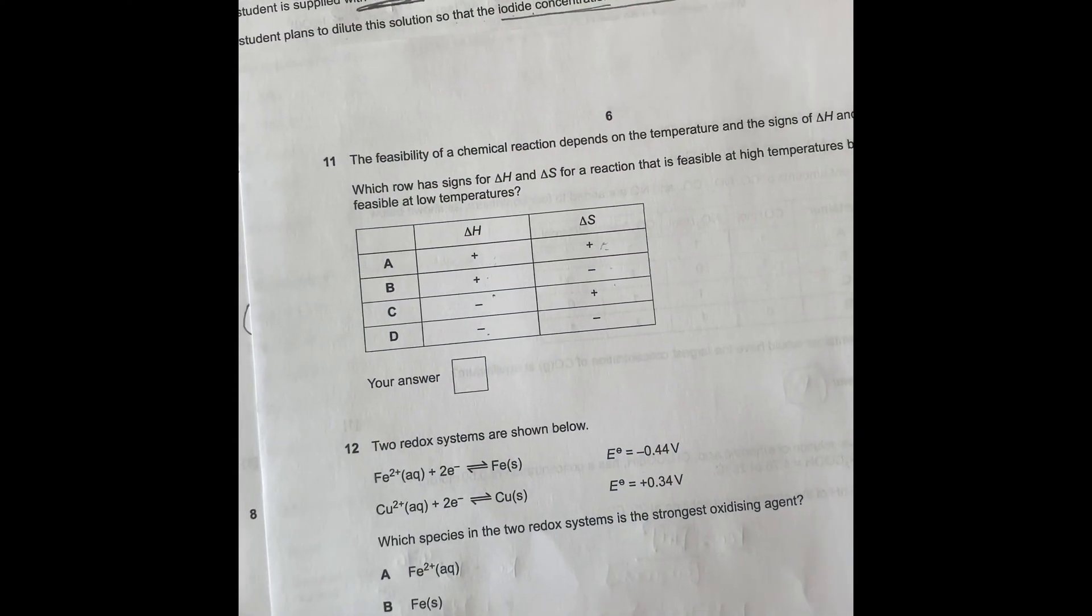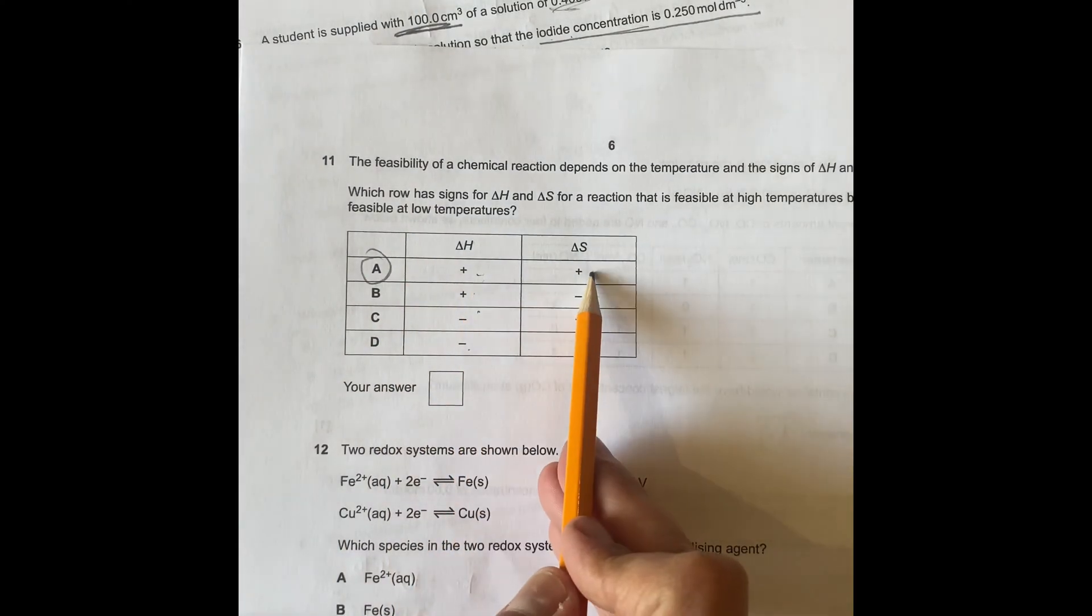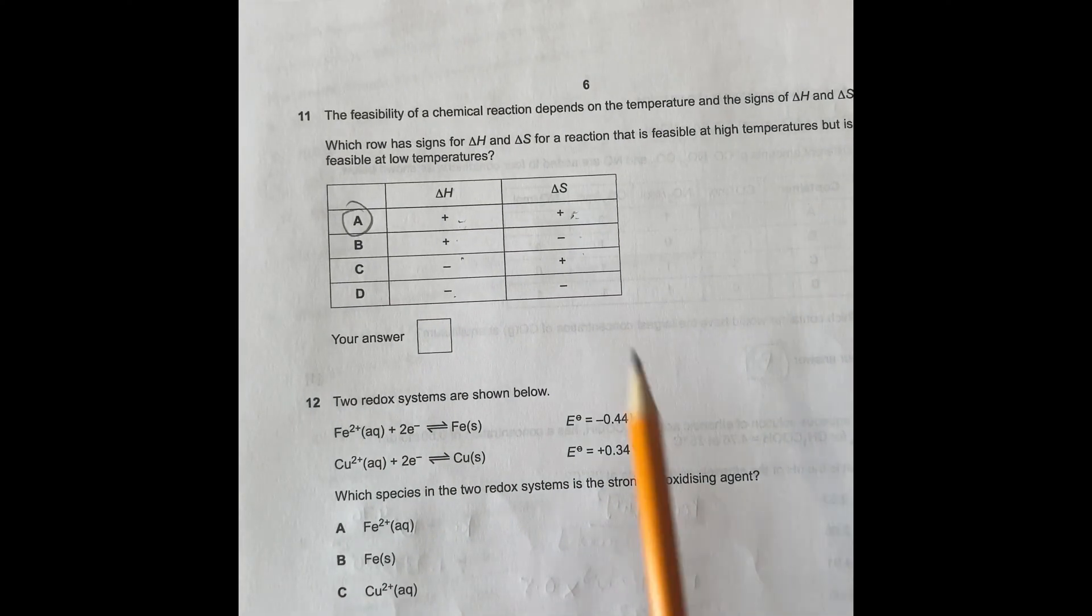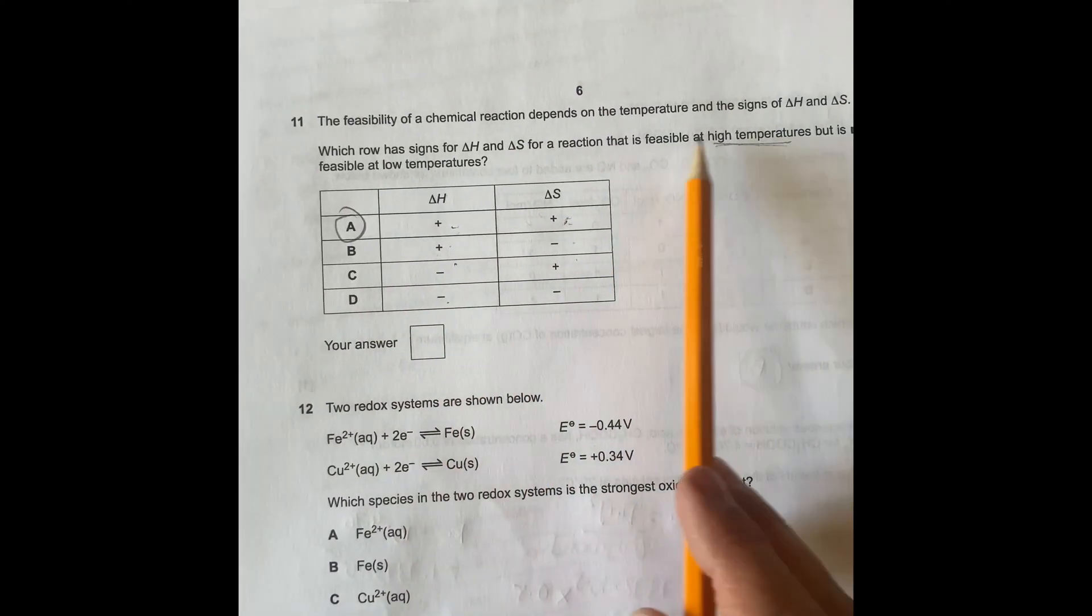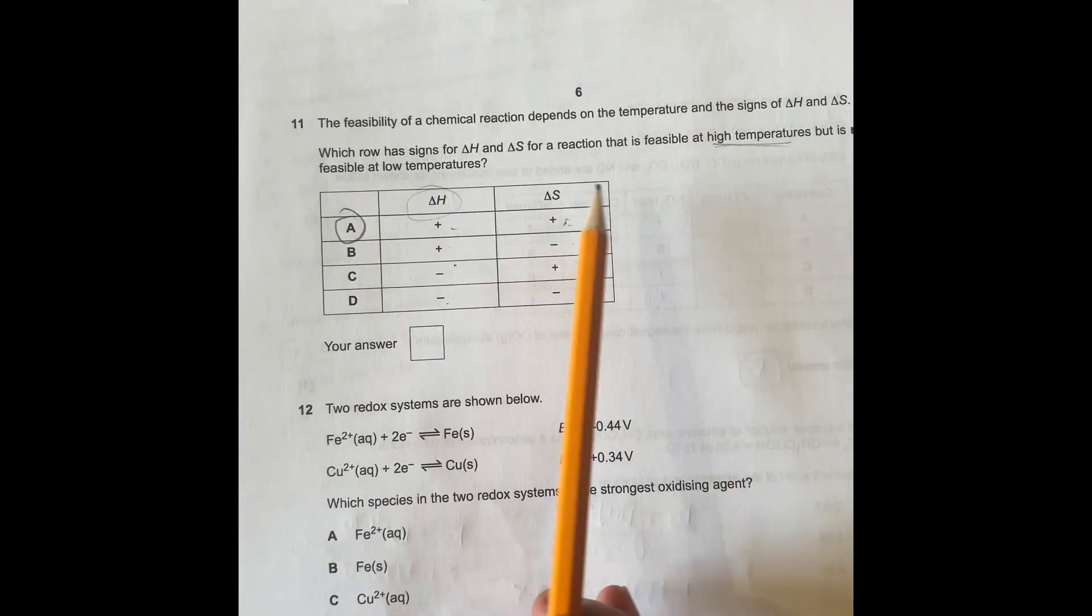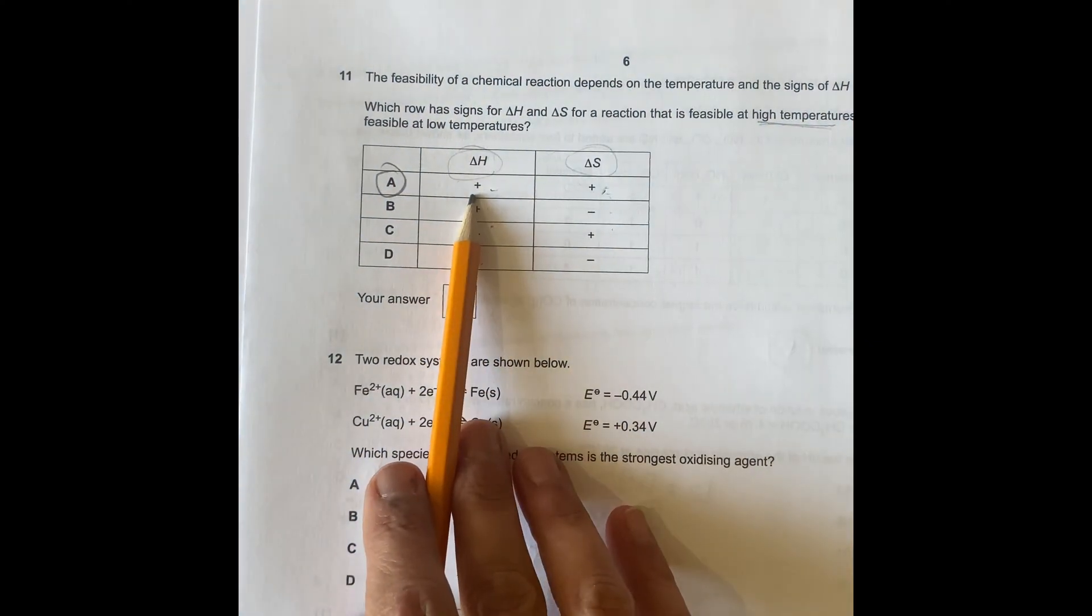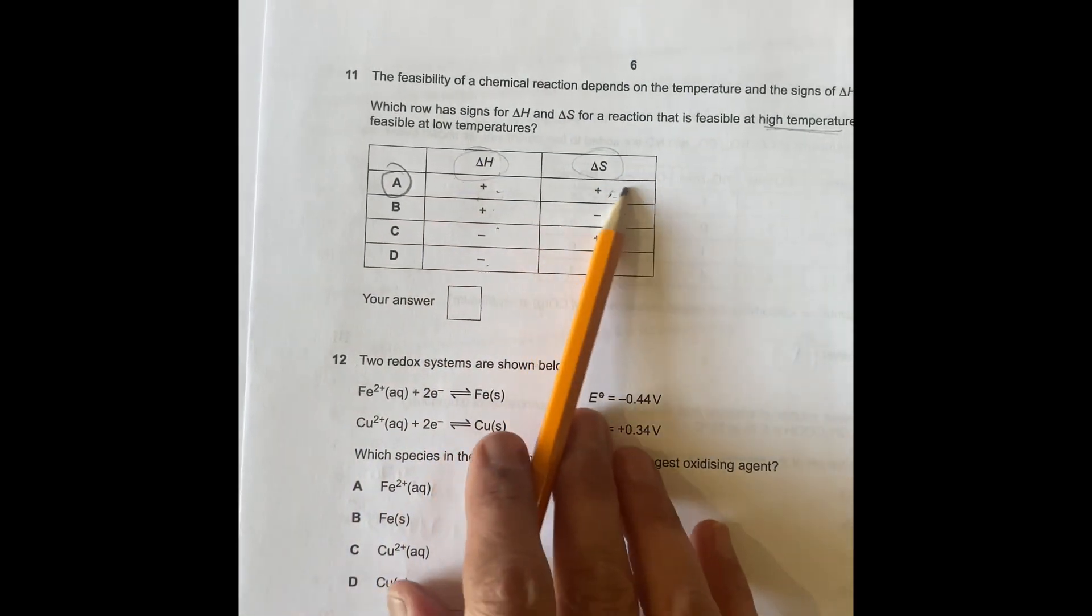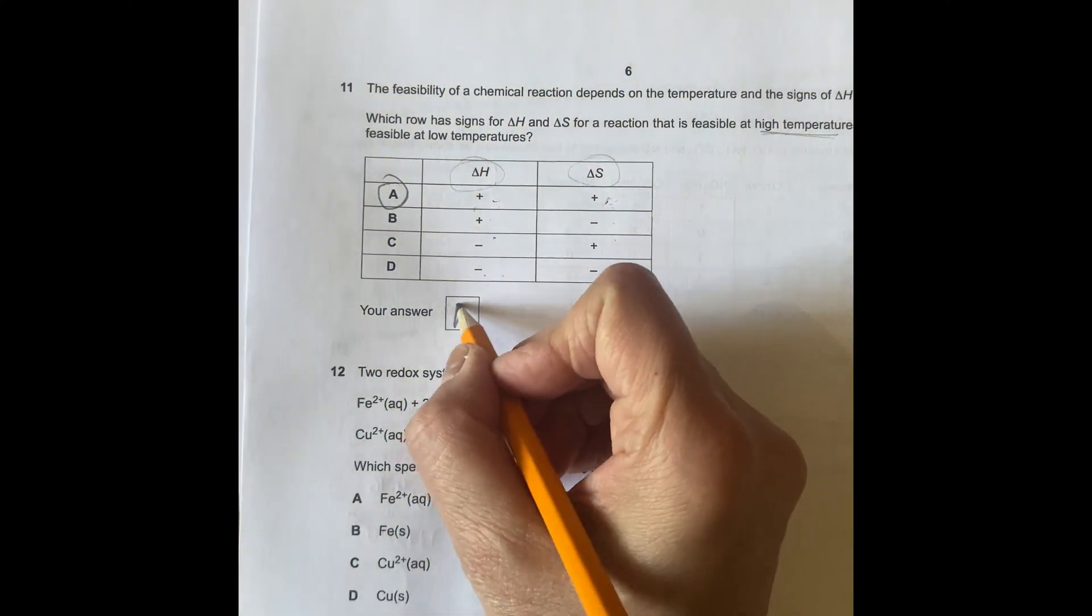So question 11, for question 11 is A, because this is delta H, so it's positive, positive. So it says synthesis is feasible at high temperatures, because that's only feasible at high temperatures. For this, when you have delta H and delta S positive, it's only feasible at high temperatures, because delta H, if it is endothermic, that means it needs energy, but if you create the energy for that, so you need to have extra temperature put in. So the answer is A.